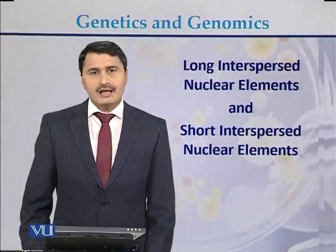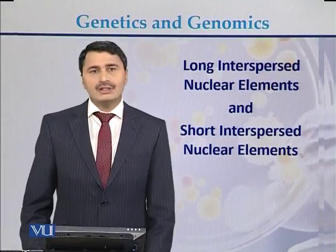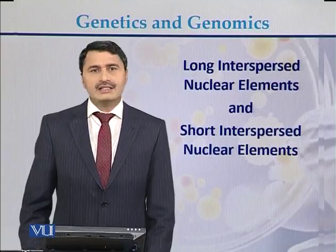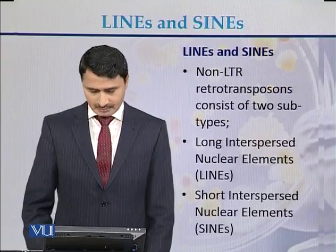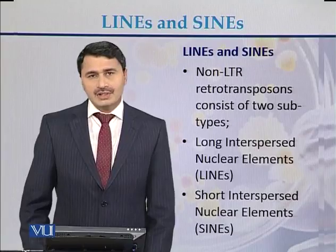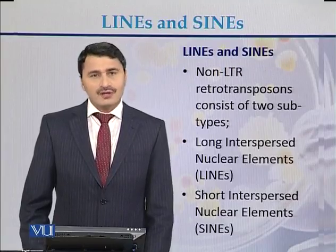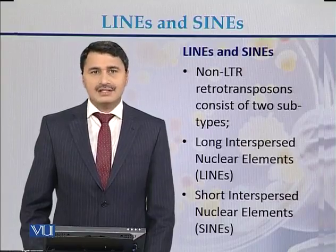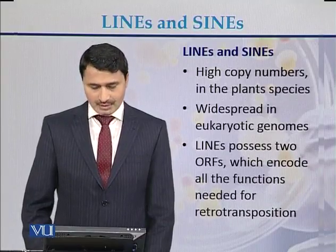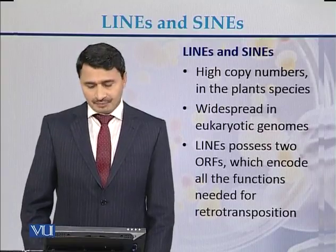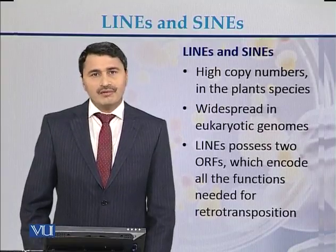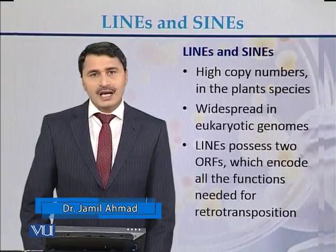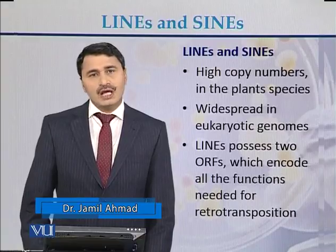Long interspersed nuclear elements and short interspersed nuclear elements are also called as LINEs and SINEs. Non-LTR elements are of two types: the first type is called LINEs and the second type is called SINEs. LINEs and SINEs are both high copy number elements found in almost all plant species, and they are also widespread in most eukaryotic genomes.